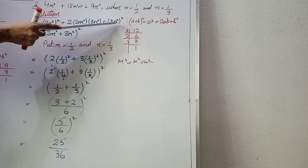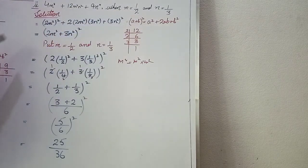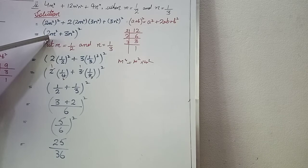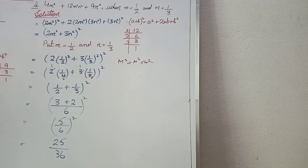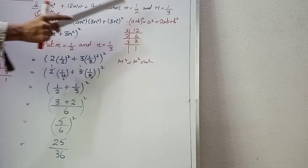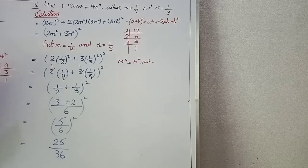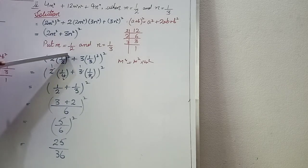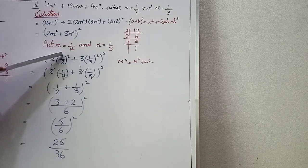Matching to the identity (a + b)² where a = 2m² and b = 3n², the expression becomes (2m² + 3n²)². Now apply the given conditions: m = 1/2 and n = 1/3. Substitute: 2 × (1/2)² + 3 × (1/3)² whole square.